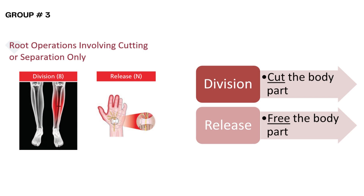There are two root operations in this third group: Division and Release. For the root operation Division, the goal of the procedure is to cut the body part into two or more parts. Most osteotomy procedures fall into this particular root operation; however, if another root operation appropriately describes the objective, you may need to code to a different root operation. For the root operation Release, the goal is to free a body part from an abnormal constraint or restriction — for example, freeing up adhesions.